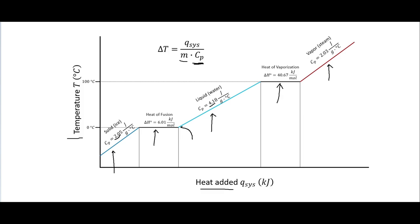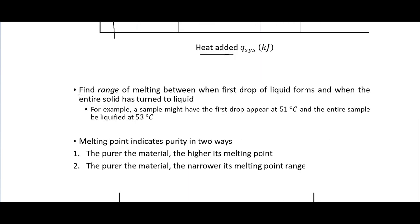In this video what we're going to be interested in is the melting part of that curve. For organic chemistry we're interested in more substances than just water, but water is a nice example. When we look for the melting point we're actually looking for the range — between the first drop of liquid forms and when the entire solid has turned to liquid. For example, if the first drop appears at 51°C and the entire sample liquefies at 53°C, the melting point range is 51–53°C.